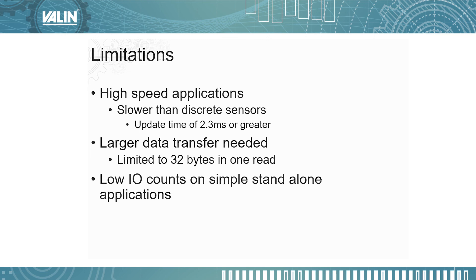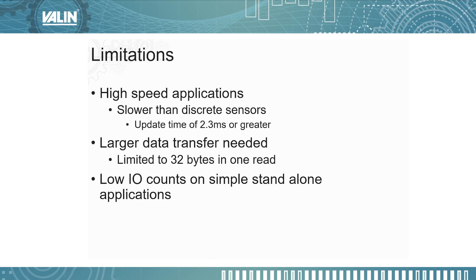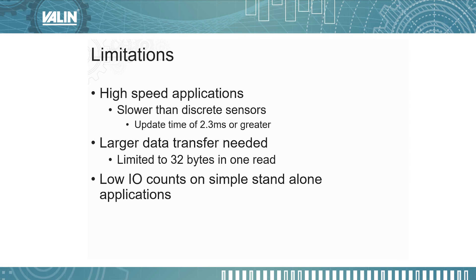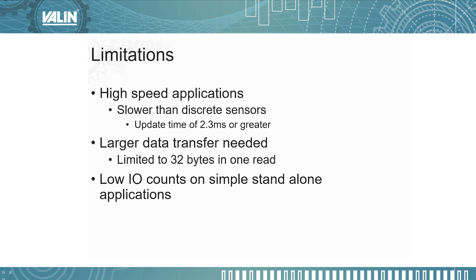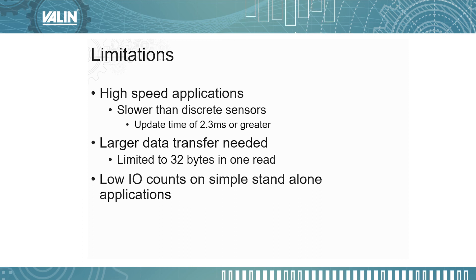What are the limitations of IO-Link? For high-speed applications, most discrete IO-Link sensors have an update time of 2.3 milliseconds or greater, so if you can't live with that update time, you'll need to go with a standard IO device. If you have a large amount of data that needs to be transferred from the device to the controller, IO-Link is a poor option because it's limited to 32 bytes. And for smaller machines with low IO counts on a simple standalone PLC, like a brick PLC, IO-Link is probably not a great option either. That's it — I know that was quick, but we're just hitting the highlights. Please look for subsequent videos showing how to use IO-Link devices with Omron N-Series PLCs and their IO-Link masters.